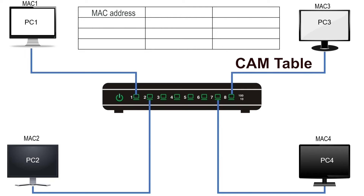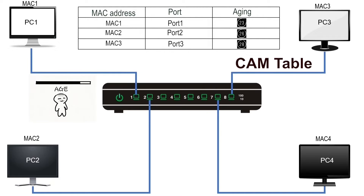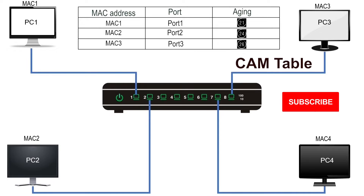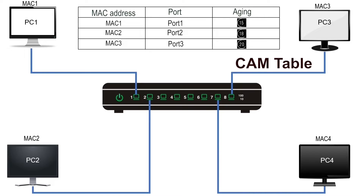The switch saves source addresses in a table known as the CAM table. The CAM table has three fields: MAC address, port, and aging. In the MAC address field, it saves the MAC address from the frame's source field. In the port field, it saves the port on which the frame was received. In the aging field, it saves a timer — a separate timer is assigned to each entry. This timer ages out old entries from the CAM table to allow room for new ones. This feature is known as aging.